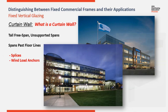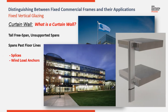As a curtain wall spans past floor lines, it needs to be anchored back to each for support. There are two types of anchors utilized to support curtain wall elevations. The first is a wind load anchor. Typically, these are located at every other floor and provide resistance to wind load deflection.